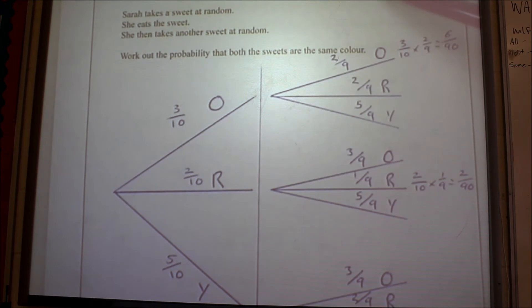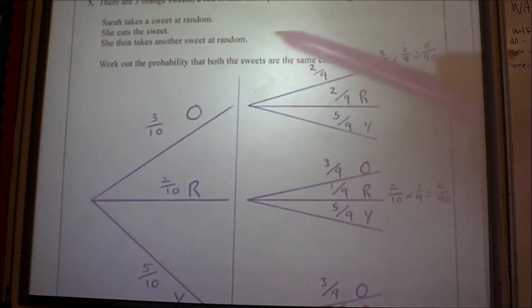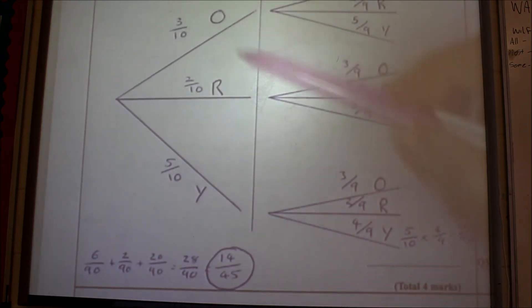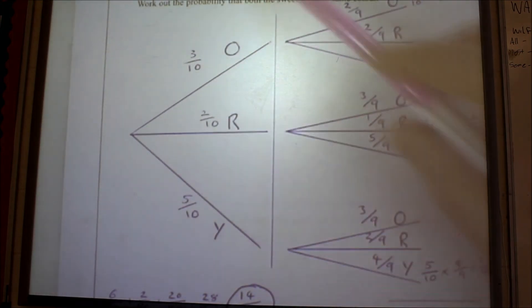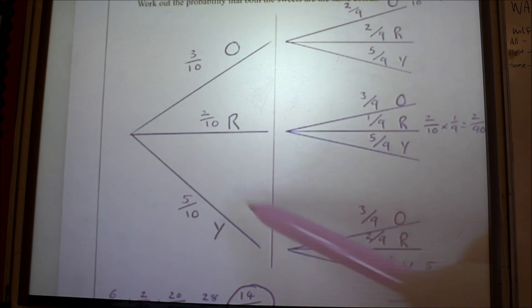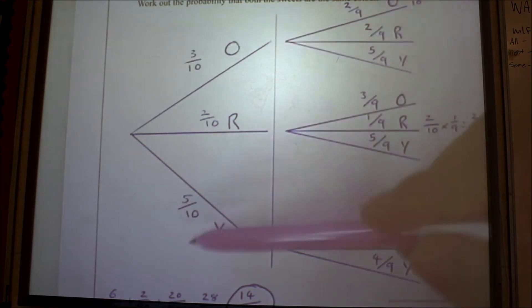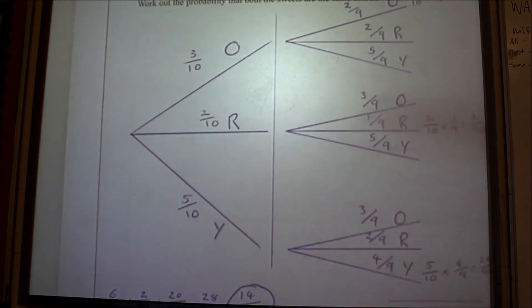Question number five. You've got to draw this yourself. There's three orange sweets, two red sweets, and five yellow sweets in a bag. Sarah takes a sweet at random, then she eats it, then she takes another sweet at random. Work out the probability that the sweets are the same color. The first lot here, there's three of them, so it's three out of ten. She takes an orange one, because we're told there's three, two out of ten for red one, and five out of ten for a yellow one. That bit there will get you one mark.